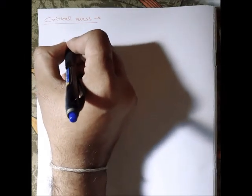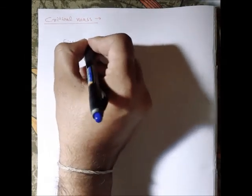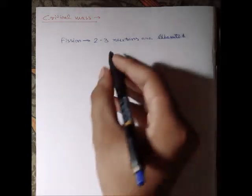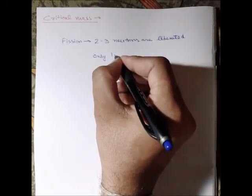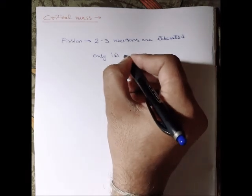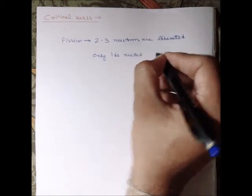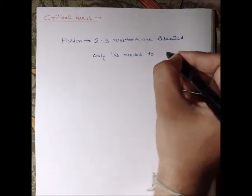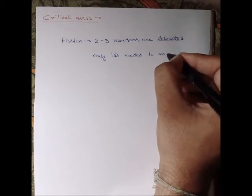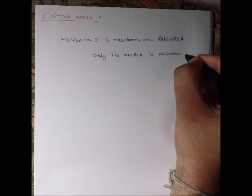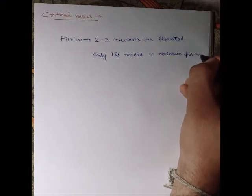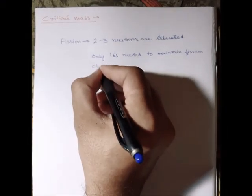From each fission, two to three neutrons are liberated, whereas only one is needed to maintain the fission chain.